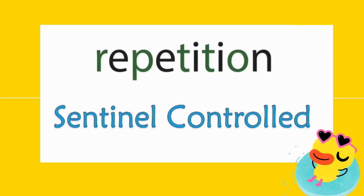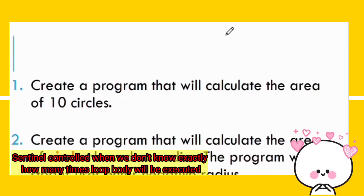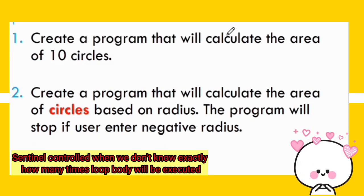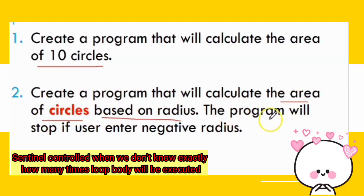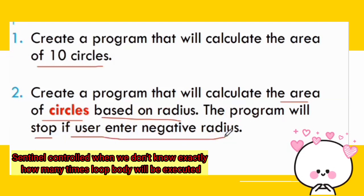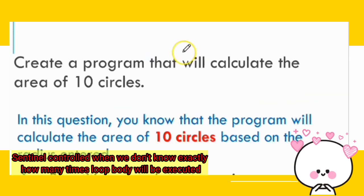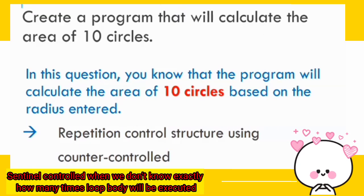We continue with repetition sentinel control. We have two questions. The first one: create a program that will calculate the area of 10 circles. The second one: create a program that will calculate the area of circles based on radius, where the program will stop if the user enters a negative radius.